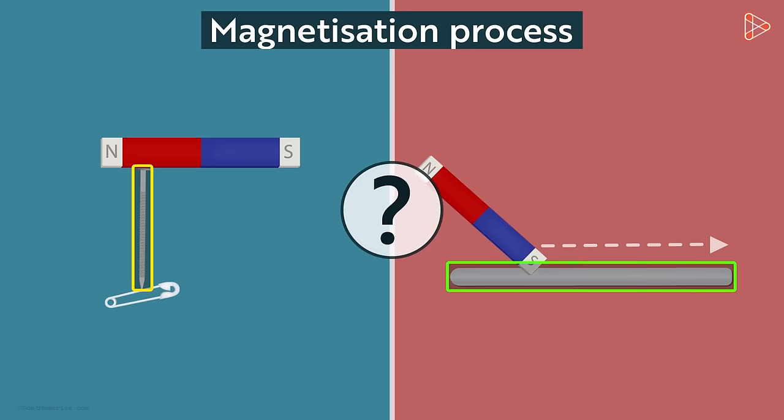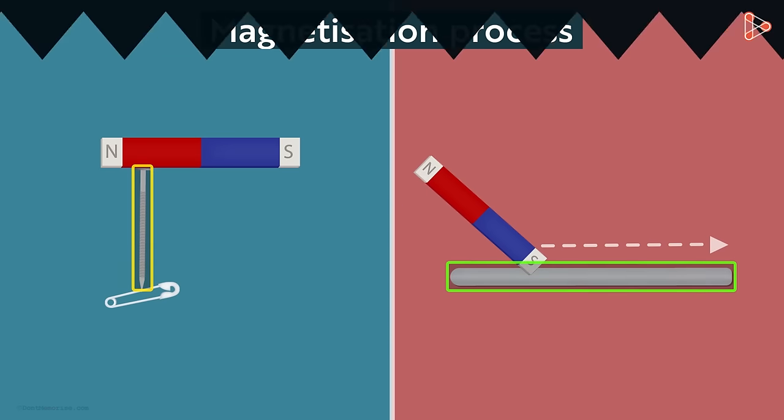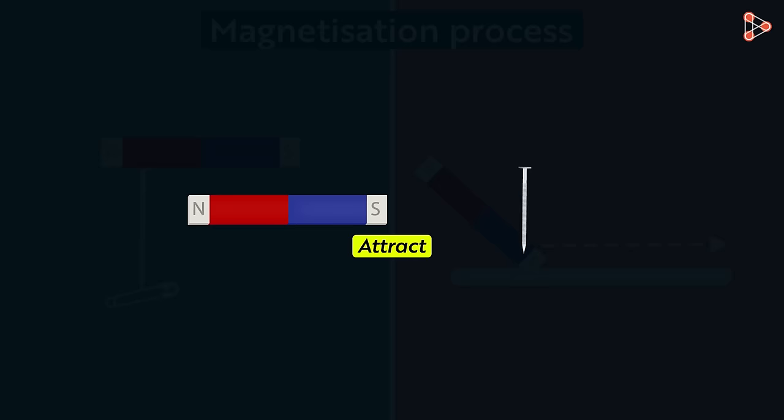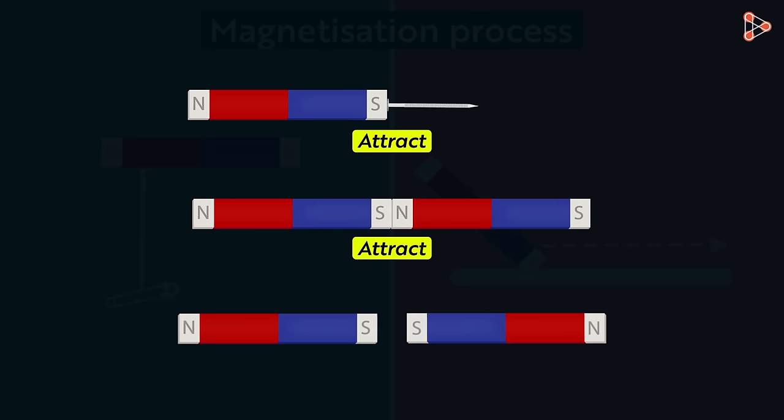What do we know about magnets? We know that a magnet attracts magnetic objects like iron and attracts or repels other magnets. Do you know what this property is called? This property of magnets to attract or repel is called magnetism.